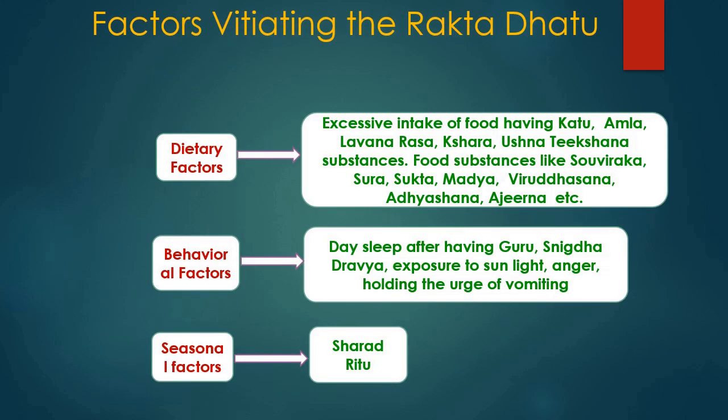Factors vitiating Rakta Dhatu: Dietary factors include excessive intake of katu, amla, lavana, char, oshna, tikshna substances; food substances like swavirak, sura, sukt, madya, viruddhashan, adhashan, ajirna, etc. Among behavioral factors: day sleep after having guru and snigdha dravya, exposure to sunlight, anger, holding the urge of vomiting — all vitiate Rakta Dhatu. Among seasonal factors, Sharad ritu vitiates Rakta Dhatu.